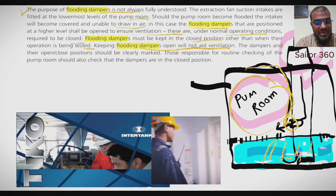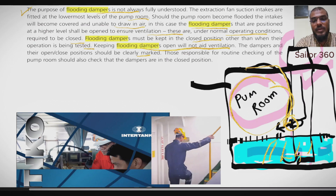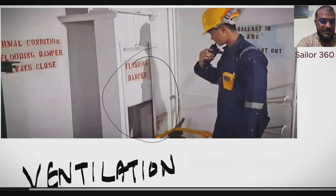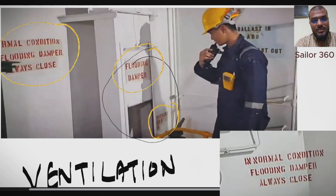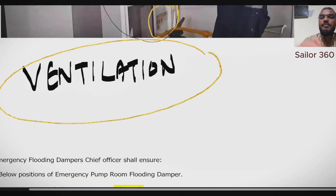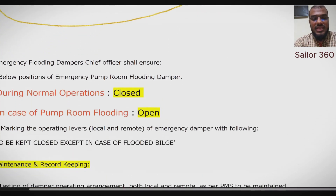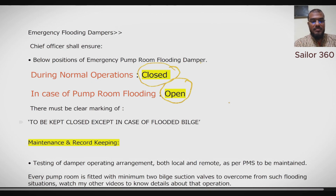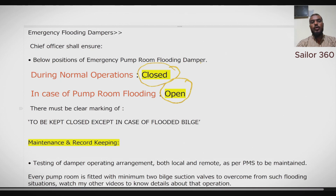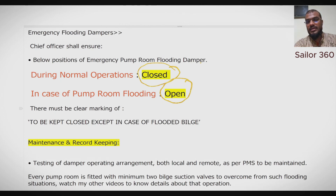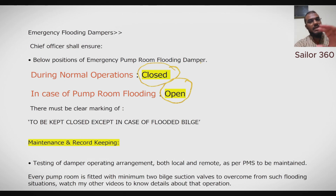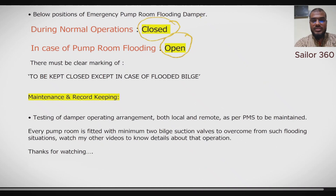The dampers and their open and closed positions should be clearly marked — this is a requirement. There should be a poster or a clearly marked stencil stating it is to be kept closed except in case of flooded bilge. This marking can be near the remote lever of the flooding damper, located outside the pump room.